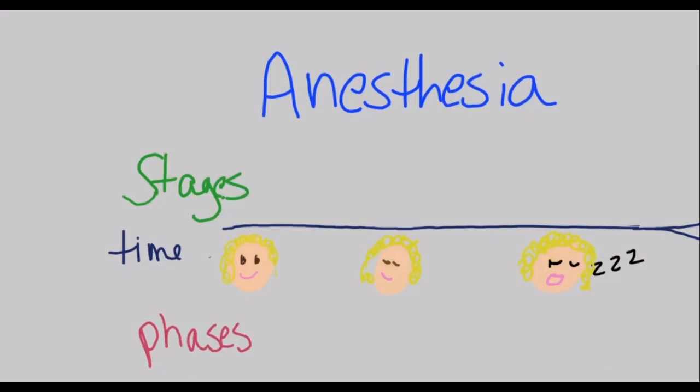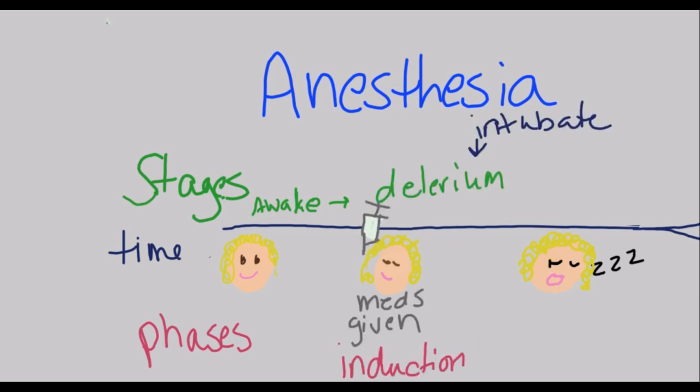The initial stage is the awake stage — the patient is alert. We then give the medication, which starts to put them in a state of delirium. They become loopy, starting to lose consciousness, and will have exaggerated reflexes.